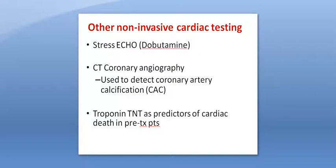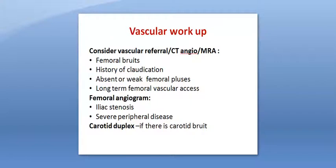There is also specific vascular workup for potential recipients, usually for patients who show abnormalities on examination such as femoral bruits, patients with long-term femoral vascular access, patients with a history of claudication, or patients with absent or weak femoral pulses or femoral bruits. Femoral angiogram could show aorto-iliac stenosis or severe peripheral vascular disease, which could prompt vascular referral for further assessment. Patients with carotid bruits should also undergo carotid duplex to assess their vascular disease.